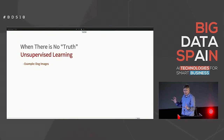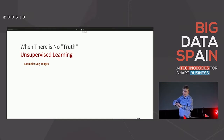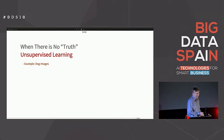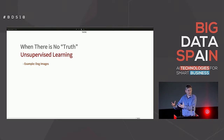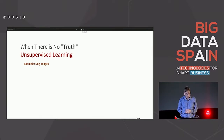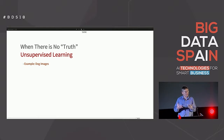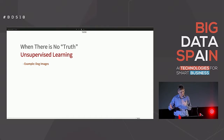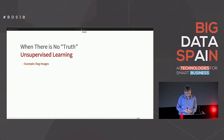So far I've focused on one big domain — probably the main domain of AI and machine learning — which is supervised learning. The supervision there was that I told it the correct answer on some examples and said, 'you learn what makes those outputs what they are.' But sometimes there's no truth — you have data but you don't know anything about what it means or what a correct prediction would be.